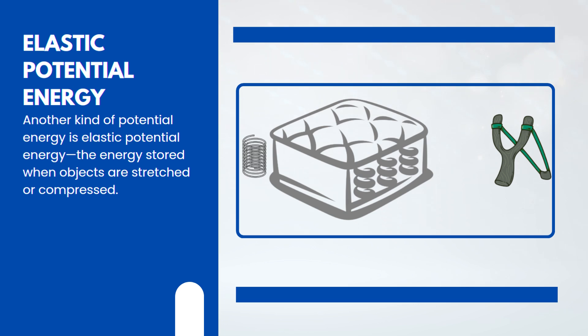Springs in a mattress and the cords of a slingshot also work the same way. The coils in a mattress compress under weight and store energy, then release it to push back when the weight is removed. The stretched cords of a slingshot store energy as they are pulled back, and when released, that stored energy launches the object forward with motion.